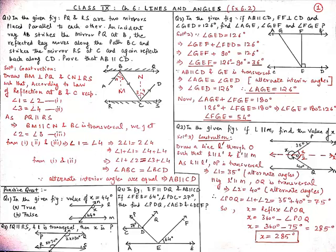Our third question is: in the given figure, if L is parallel to M, find the value of X. From the figure, X is equal to the reflex of angle POQ. By construction, we draw a line L' passing through point O such that L is parallel to L' and L' is parallel to M. Since L' is parallel to L where OP is the transversal, angle 1 equals 35 degrees by alternate interior angles. Similarly, since L' is parallel to M where OQ is transversal, angle 2 equals 40 degrees by alternate interior angles. Therefore, angle POQ equals angle 1 plus angle 2, which is 35 plus 40 equals 75 degrees.